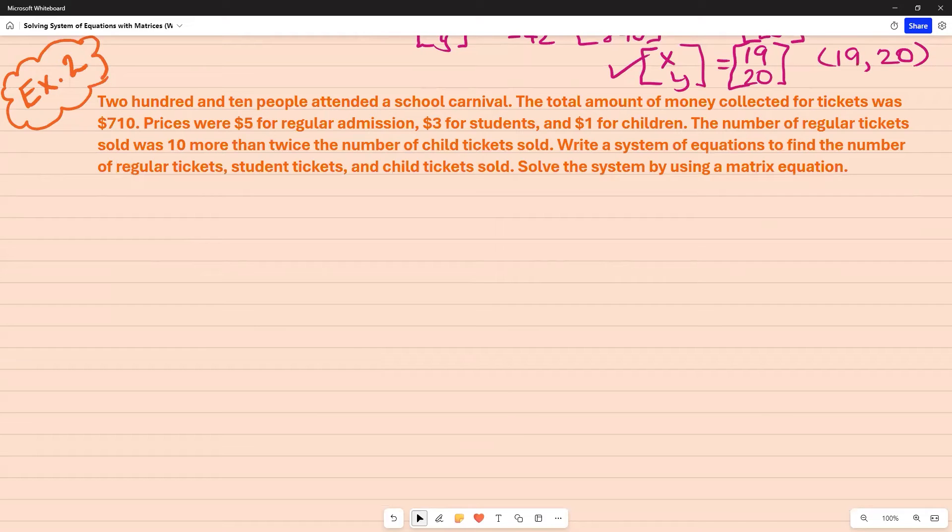The number of regular tickets sold was 10 more than twice the number of child tickets sold. Write a system of equations to find the number of regular tickets, student tickets, and child tickets sold. Solve the system by using a matrix equation.